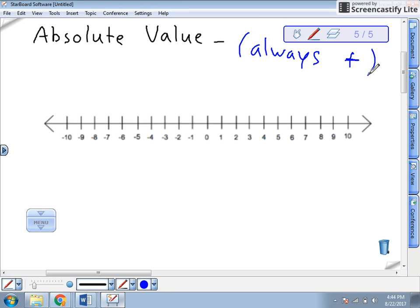Now, why is it always positive? Because absolute value is a distance, and there's no such thing as negative distance. You wouldn't say, hey, I'm negative two miles away. Distance is always positive, and absolute value is the distance from zero.